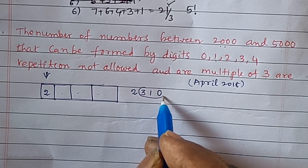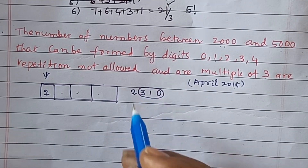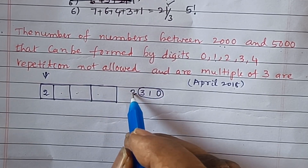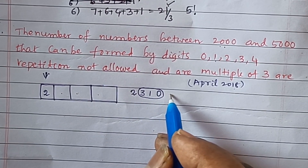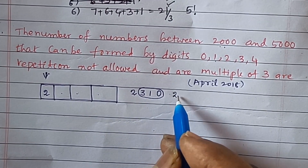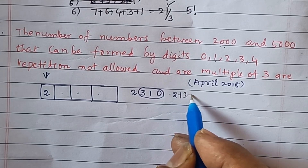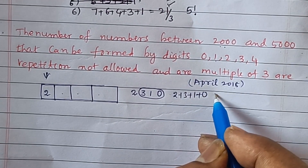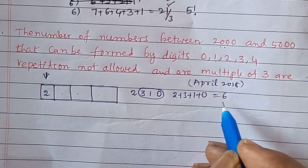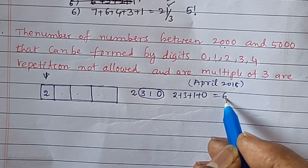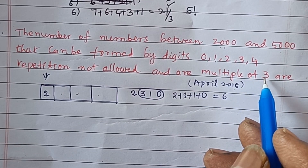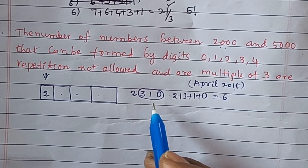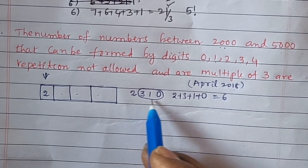For a number to be divisible by 3, the sum of its digits must be divisible by 3. For example, 2 plus 3 plus 1 plus 0 equals 6, and 6 is divisible by 3. Therefore, this forms a valid pattern.